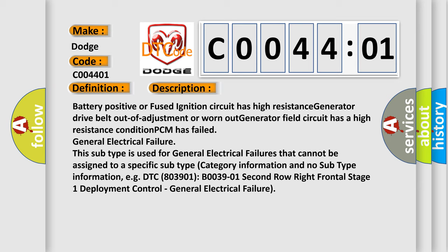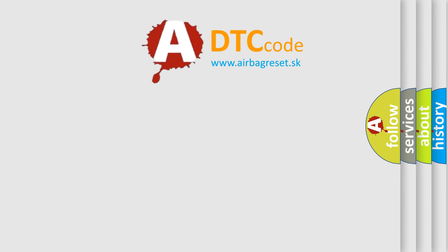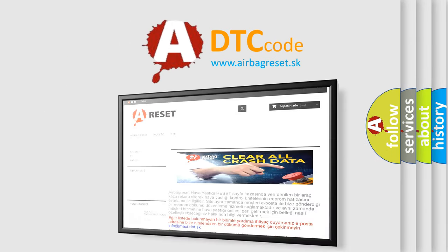This subtype is used for general electrical failures that cannot be assigned to a specific subtype category information and no subtype information, e.g. DTC B003901 B003901 second row right frontal stage 1 deployment control, general electrical failure. The Airbag Reset website aims to provide information in 52 languages. Thank you for your attention.